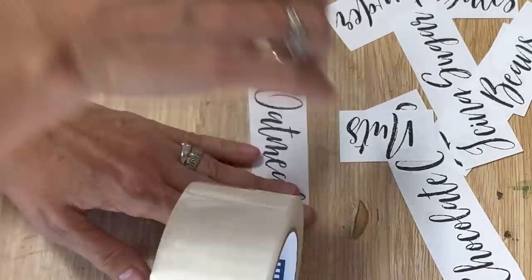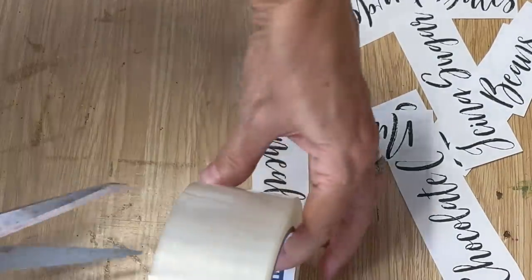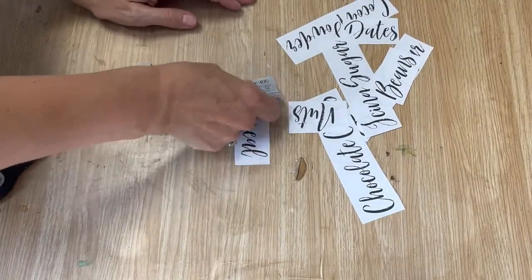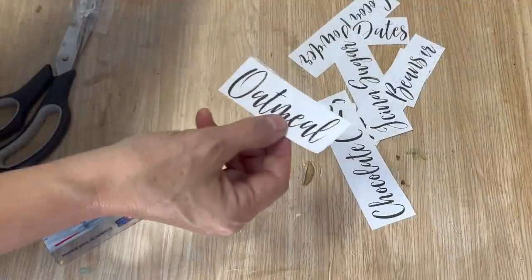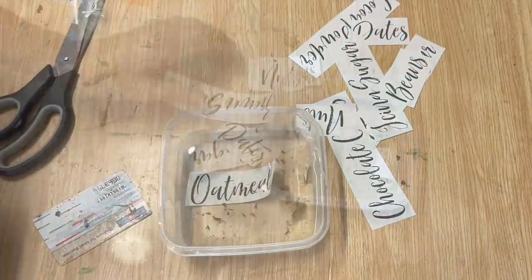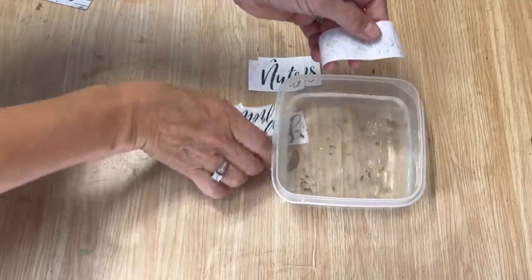I'm putting the packing tape right on top of it, going to cut it down to size, then I'm going to use a credit card to make sure that it's pressed down really firmly. Then we're going to put it in a little dish of water and let it soak for 10 or 15 minutes.